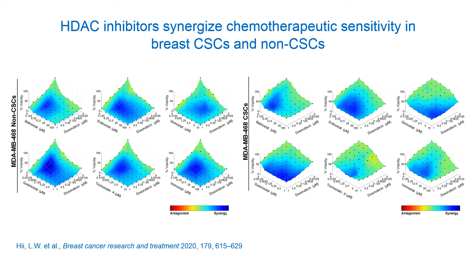Since recent reports have shown that epigenetic mechanisms can influence breast cancer stemness, and the utility of HDAC inhibitors as epigenetic drugs for targeting both cancer stem cells and non-stem cancer cells has been demonstrated in hematological and other solid malignancies, we sought to investigate whether HDAC inhibitors could synergize conventional chemotherapeutic agents in targeting both breast cancer stem cells and non-stem cancer cells. As shown here, HDAC inhibitors synergize doxorubicin sensitivity in both populations. Preclinical studies and clinical trials testing the efficacy, toxicity, and utility of different HDAC inhibitors, both as monotherapies or in combination with other therapies, are currently ongoing.